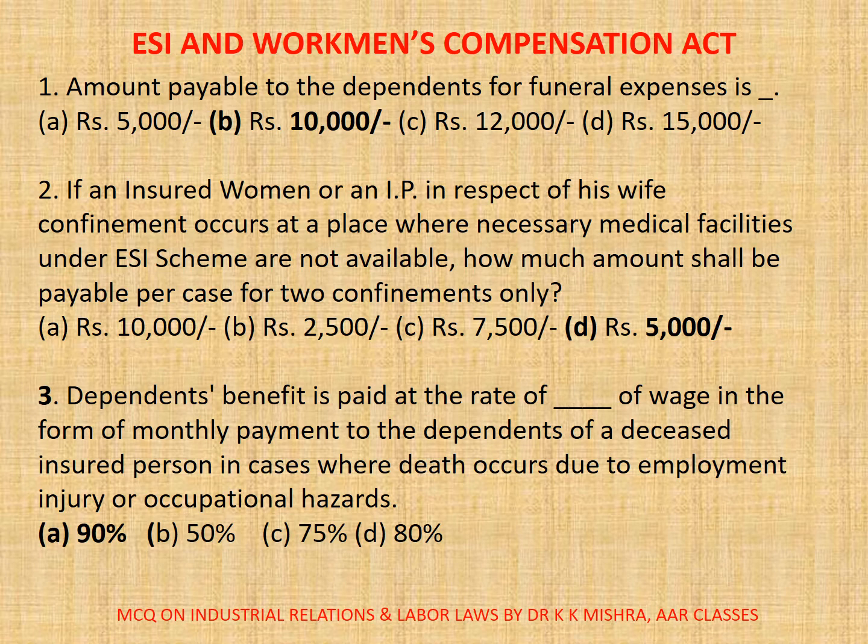Question number two. If an insured woman, or an I.P. in respect of his wife, confinement occurs at a place where necessary medical facilities under ESI scheme are not available, how much amount shall be payable per case for two confinements only? A. Rupees 10,000; B. Rupees 2,500; C. Rupees 7,500; D. Rupees 5,000. Correct option is D, Rupees 5,000.